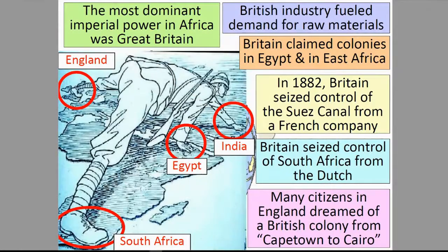The most dominant imperial power in Africa was Great Britain. British industry fueled demand for raw materials. Britain claimed colonies in Egypt and East Africa. In 1882, Britain seized control of the Suez Canal from a French company. Britain also seized control of South Africa from the Dutch. Many citizens in England dreamed of a British colony from Cape Town to Cairo.